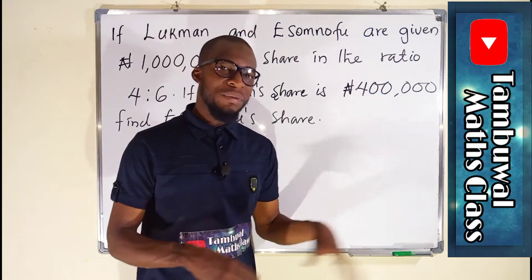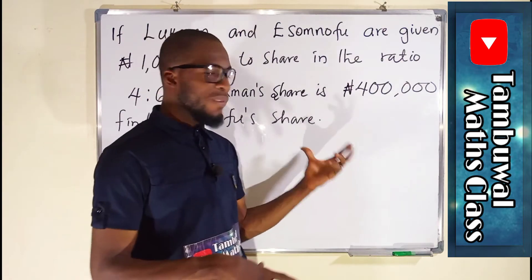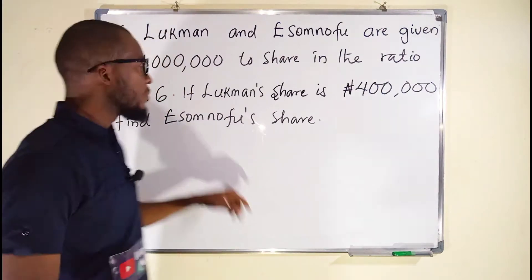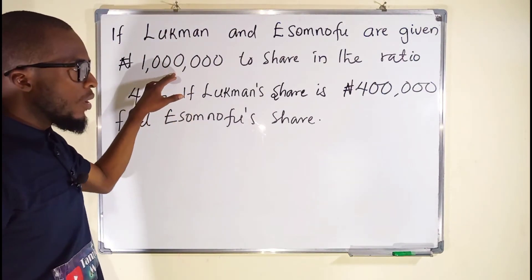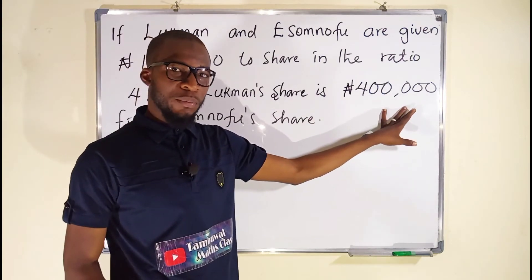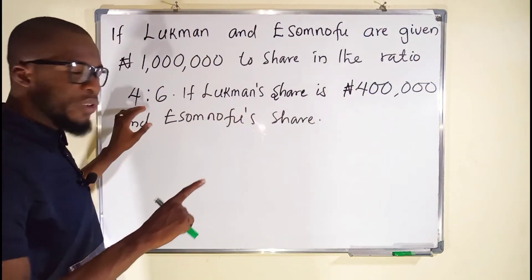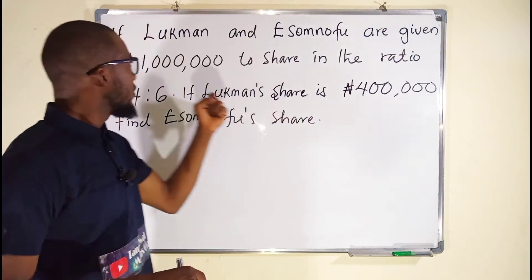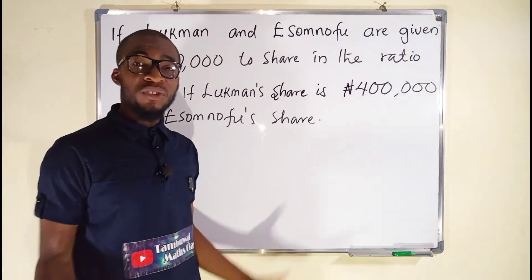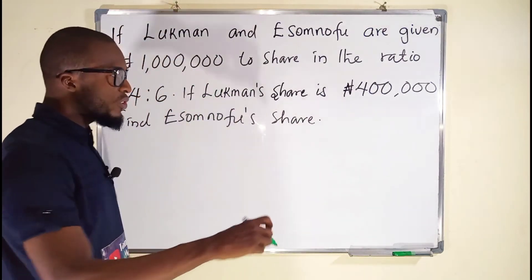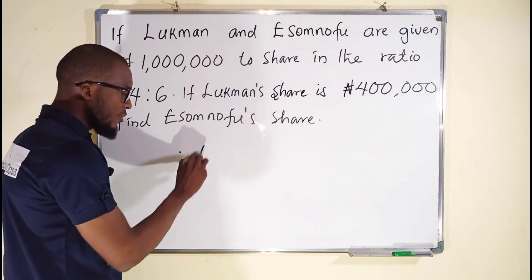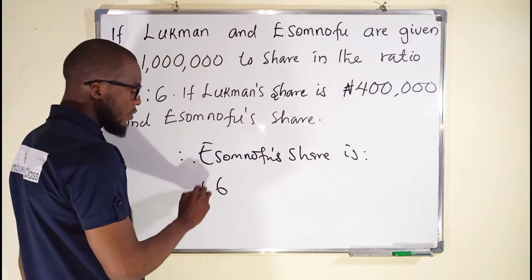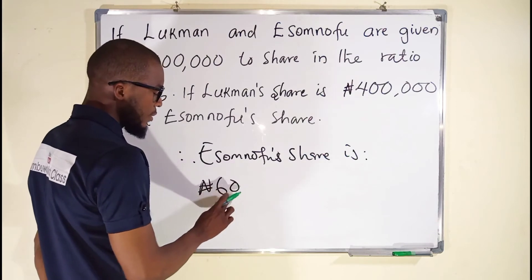The way I will solve this question will be entirely different from how Mr. Isomnofu solved the same problem. In case of an objective question, look at how you will solve this. The total is 1 million, and my share is already given as 400,000. In case of an objective question, do not even consider your ratio. If you remove 400,000 out of 1 million, what is left? It's just 600,000. So in case of objective questions, Isomnofu's share is 600,000.